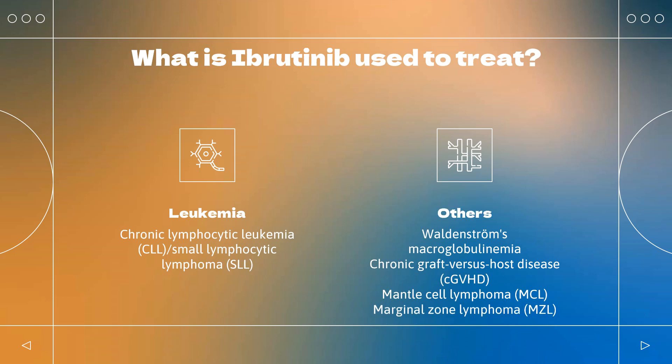Ibrutinib is indicated for the treatment of the following conditions. Chronic Lymphocytic Leukemia (CLL) / Small Lymphocytic Lymphoma (SLL): In the US, it is used in adult patients with or without 17p deletion. In Europe and Canada, it is used as a single agent or combined with rituximab, obinutuzumab, or venetoclax in previously untreated CLL patients. In patients who have received at least one prior therapy, it is used as a single agent or in combination with bendamustine and rituximab.